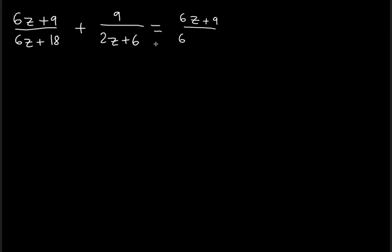So as a result, we will have z plus 3, because 3 times 6 is 18. And then notice that z plus 3 is going to be a crucial factor because in the second fraction we can take out the 2 as well.